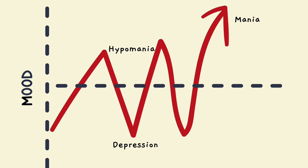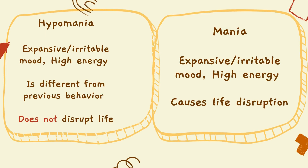This chart gives a visual representation of how mood for a person with bipolar disorder might look. Depression takes them really low, hypomania spikes it up to an expansive, irritable mood, and then mania kind of shoots it off the chart — a really hyperactive, expansive, happy mood.